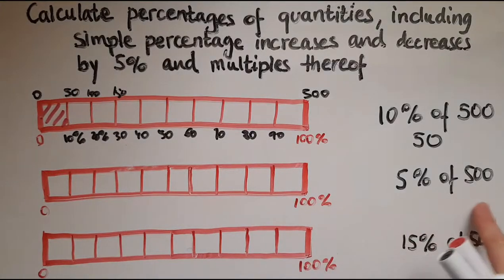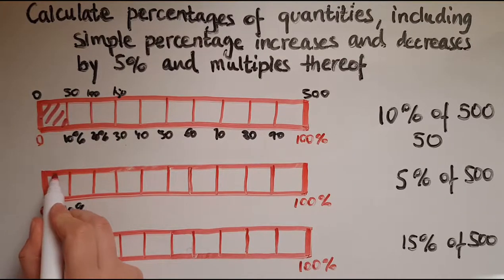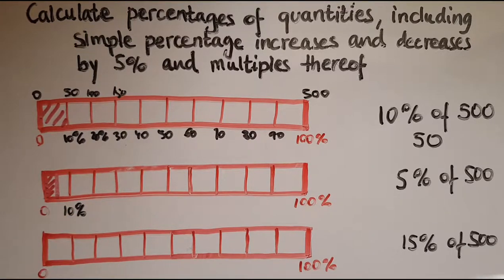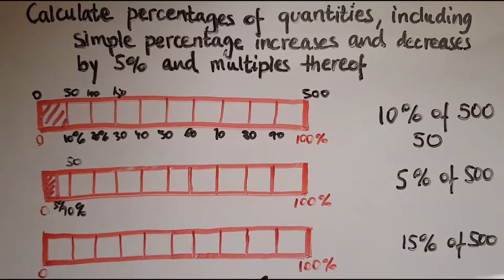Now I'll work out 5% of 500. If we look at the next bar, this is 10%. What part of 10 is 5? It is actually half of it. So I'll need to cut 10 into two equal parts. So this would be 5%, half of the 10. And if 10% was equal to 50, then 5% must be half of it, which is 25.